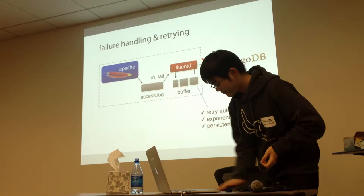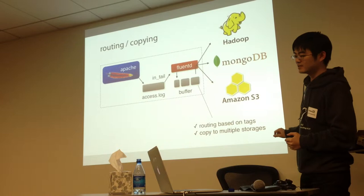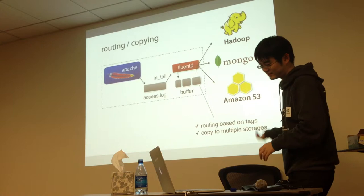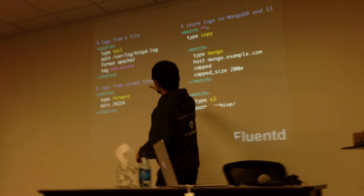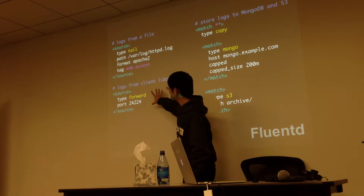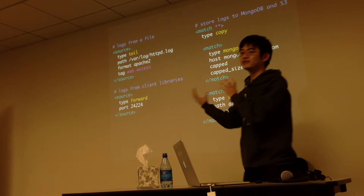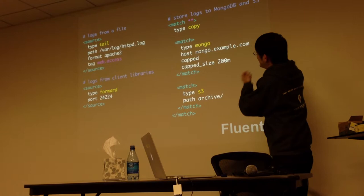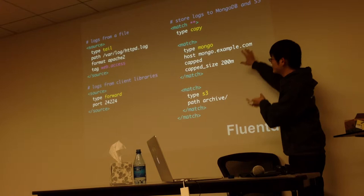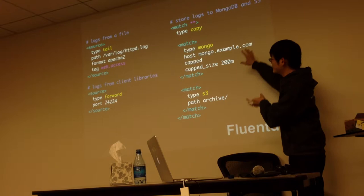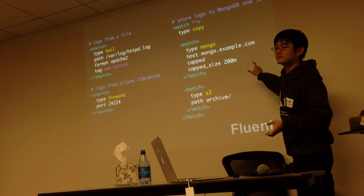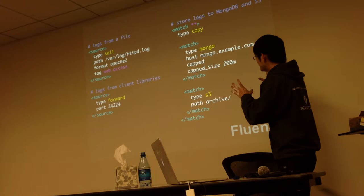Fluentd manages routing and copying, so you can easily add to the mix. Here is an example configuration file. This data source uses the tail plugin to read a bus log. This source listens on a port to collect data from applications. Fluentd copies data into two storages: one is MongoDB and the other is S3. The MongoDB plugin supports a capped collection, which means MongoDB stores only recent data, while S3 stores the whole archive. This is a very typical configuration.